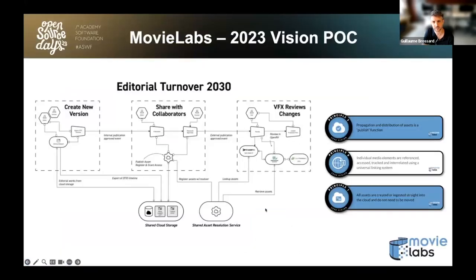We've also seen the community run different types of experiments with RV, updating the scans and building proof of concepts for their studios. Our first demo is from Chris Viano, who worked on a proof of concept leveraging OpenRV to test some ideas from the MovieLabs 2030 vision.